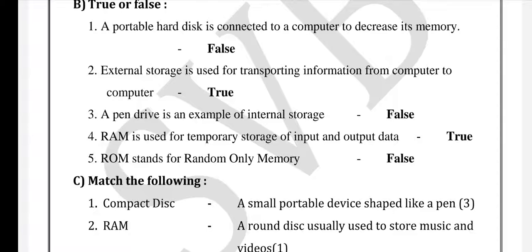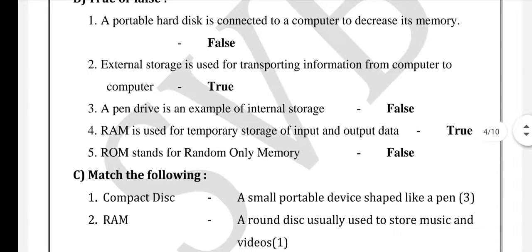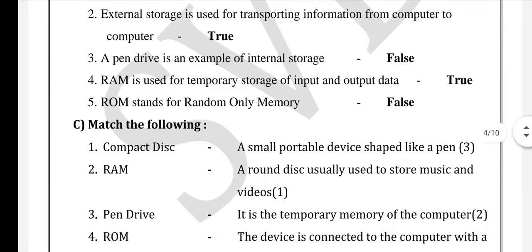Third one: RAM is used for temporary storage of input and output data — this is True. Fourth one: ROM stands for read-only memory, not random-only memory — so this is False. Read-only memory is correct.